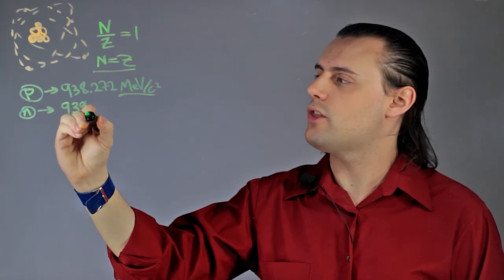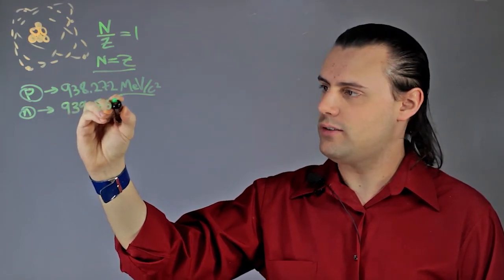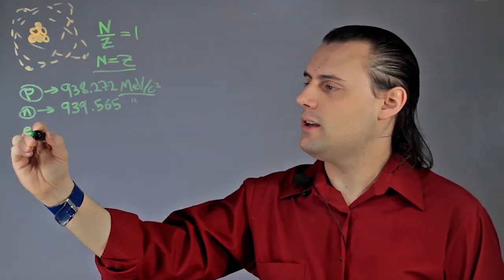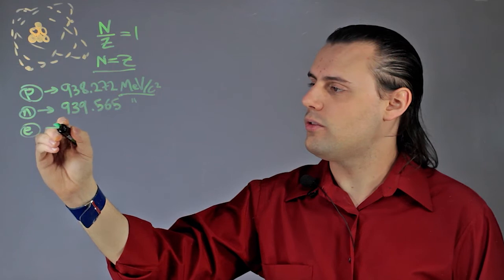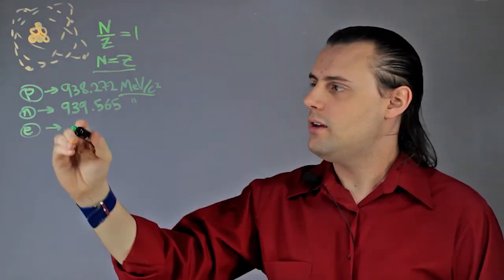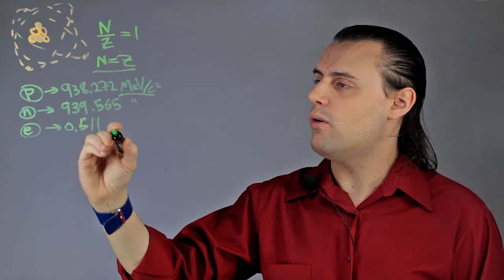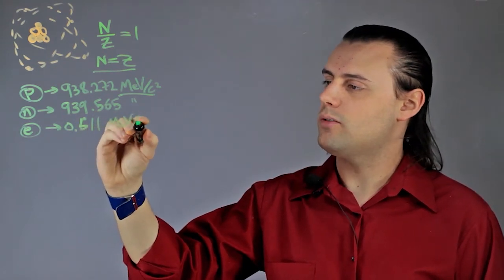939.565 MeV over speed of light squared. Finally, an electron is several orders of magnitude lighter. It's equal to approximately 0.511 mega electron volts per speed of light squared.